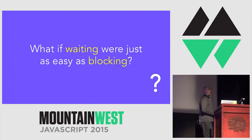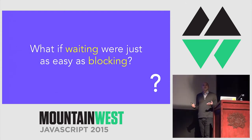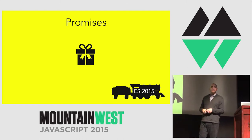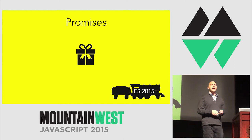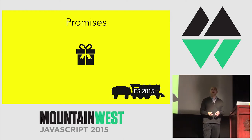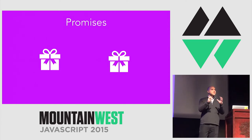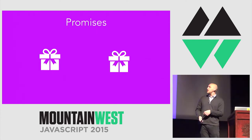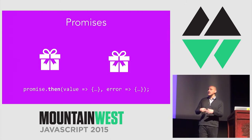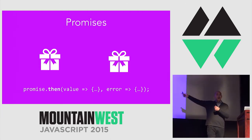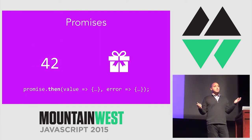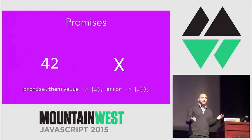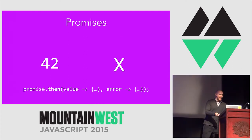So what if waiting were just as easy as blocking? What if JavaScript understood how to push as well as pull? Promises were introduced in ES2015. A promise is a value that represents an eventually realized asynchronous value from a computation. There are two possible outcomes: you can call then to get the value out of a promise — it'll be pushed to you in a callback — and the two outcomes are either it succeeded and you get a value, or something went wrong and you get an error.